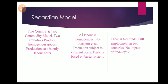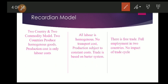The Ricardian model is a two-country and two-commodity model. Two countries produce homogeneous goods. Production cost is only labor cost. All labor is homogeneous. There is no transport cost. Production is subject to constant cost. Trade is based on a barter system. There is free trade and full employment in both countries. There is no impact of the trade cycle. This is the Ricardian model.